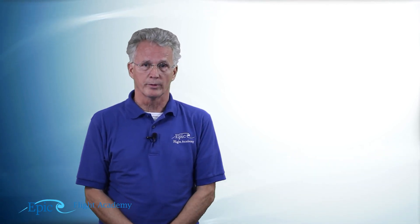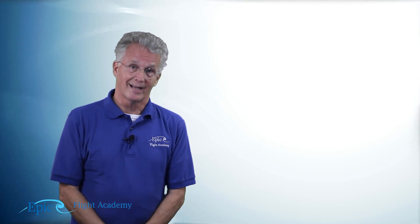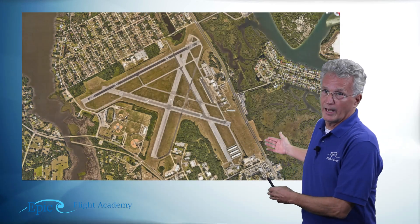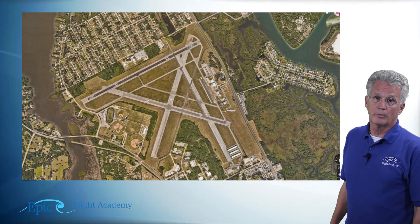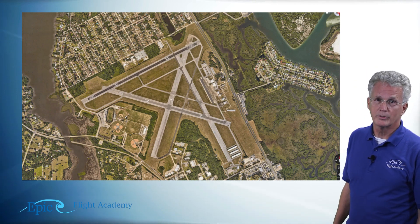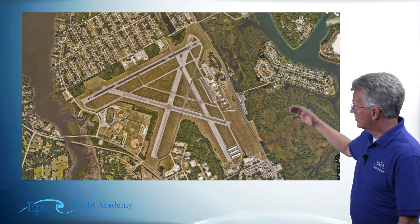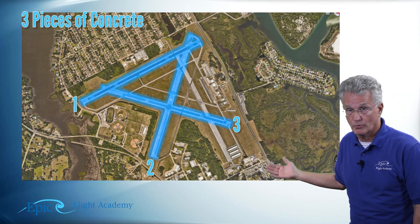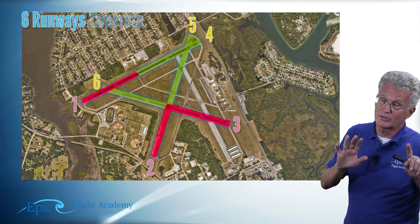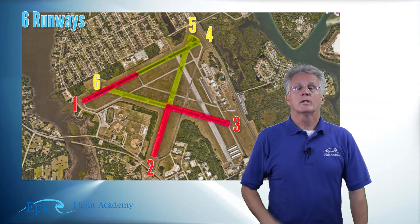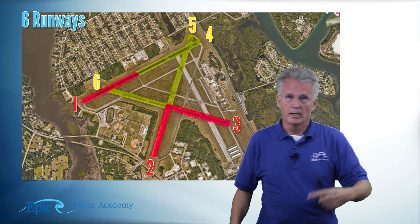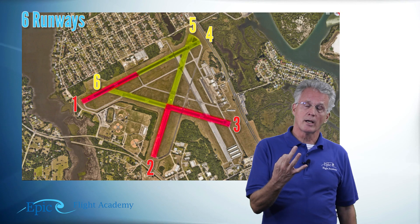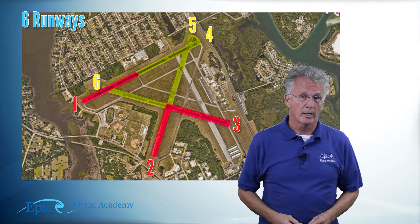An important part of airport operations at any of the four types of airports is runway layout. Here's an example of the runway layout at New Smyrna Beach Airport in New Smyrna Beach, Florida. At New Smyrna Beach, we have three big pieces of concrete, but that is six runways, because each piece of concrete you could land in either direction. So three hunks of concrete times two equals six possible runways.